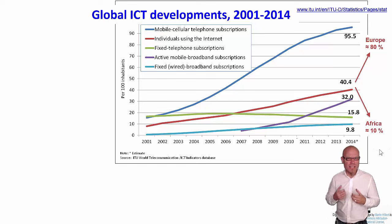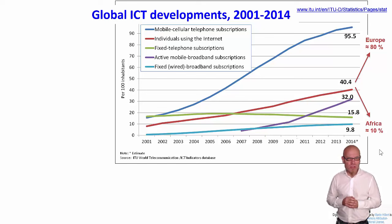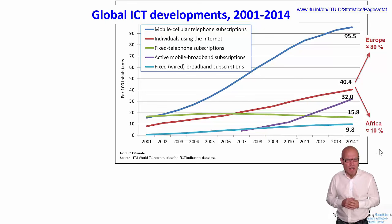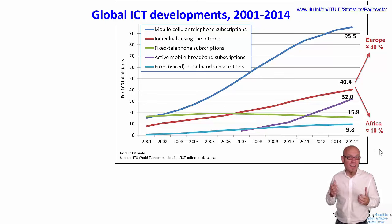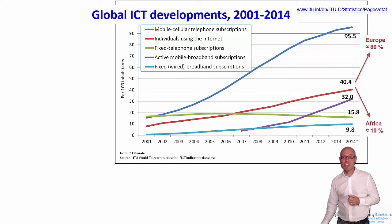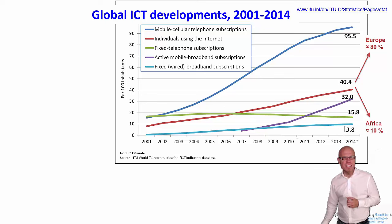Having access to the internet doesn't tell you anything about how good the connection is. Most people in the world actually have access to a narrowband connection, not a broadband connection. That means access to less than 256 kilobits — less than a quarter of a megabit. Fixed broadband only reaches 10% of humankind.